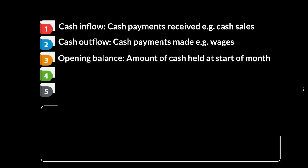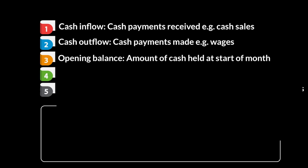Then there's your opening balance — this is the amount of cash that you had at the start of the month. And then there's also closing balance, the amount of cash you have remaining at the end of each month. Remember that the closing balance of one month becomes the opening balance of the other month — it's like you had $100 in your pocket, you went to sleep, you woke up, there's still $100. So that's your opening and closing balance.